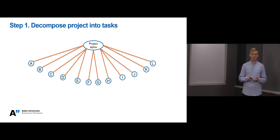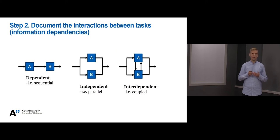In this example an imaginary project called project alpha has been decomposed into tasks running from A to L. In total this project has 12 different tasks that need to be executed to complete the project. Next we need to document the different interactions between the tasks. Here you find examples of the basic interactions that any two tasks can have. In the first example on left, task B is dependent on the information produced by task A before it can be completed. This means that tasks A and B are sequenced.